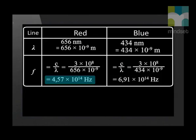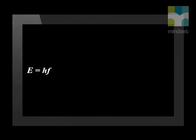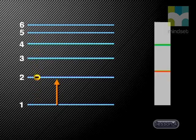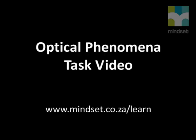We use Planck's equation to find the energy of a photon for each color. Planck's constant h is 6.63 × 10⁻³⁴ joule-seconds. Substituting values, we calculate the energy in each case. A photon of blue light has more energy than a photon of red light. This makes sense because red light is released when the electron falls only one energy level, whereas blue light is released when the electron falls three energy levels.